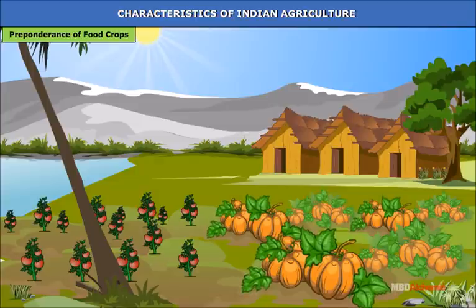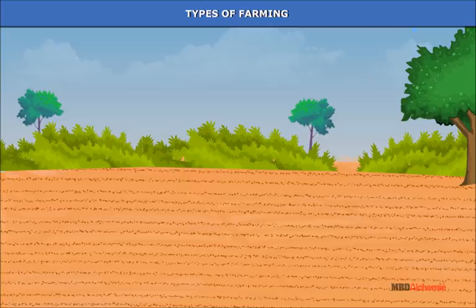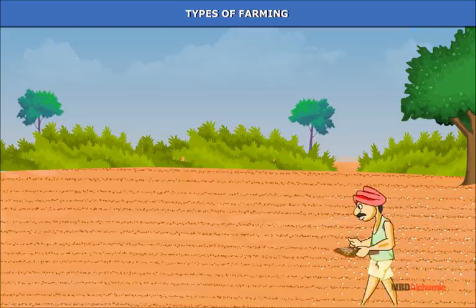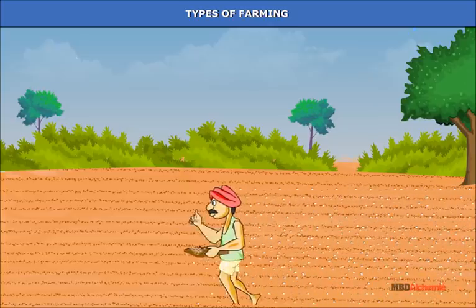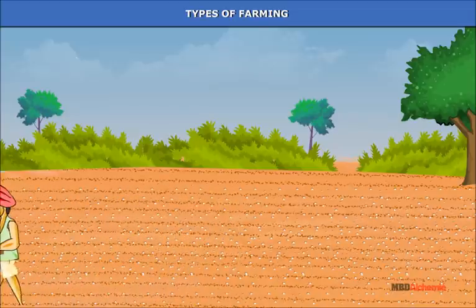There are inadequate means of transport, particularly in rural areas. The use of fertilizers, pesticides and high-yielding varieties of seeds are increasing as a result of awareness created by the Green Revolution. Under the influence of these factors, different types of farming or agriculture practiced in India are the following.